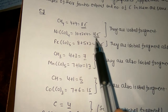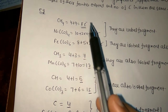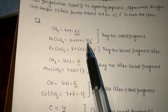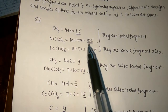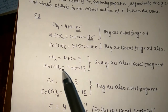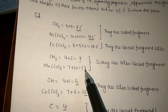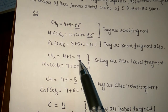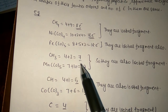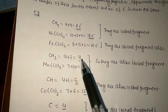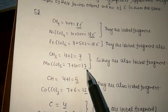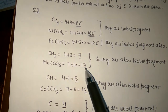Similarly, for CH3 there are 7 electrons, and for Mn(CO)5 there are 7 + 10 = 17 electrons. The last digit is 7 in both cases. To complete their octet, there is a requirement of only one electron in each case, so CH3 and Mn(CO)5 are also called isolobal fragments.